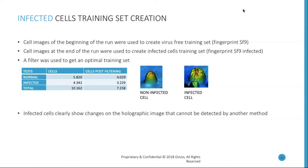The fingerprint for SF9 infected cells was established, with an extra filter used to get an optimal training set. You can already clearly see on the 3D holographic image that there is a difference between a non-infected cell and an infected cell — and this cannot be detected by any other method except our holographic imaging method.